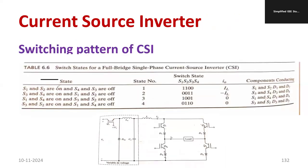Now you can see the switching pattern. Here it is very clearly written: state, state number, switching state, output current, and components conducting. First of all, S1 and S2 are ON. S1 and S2 are ON, then S4 and S3 are OFF. Only these two are ON. This is state number one. Switching state will be 1100. The output current is equal to IL, it will be in positive direction.